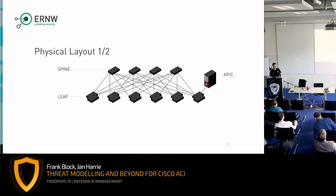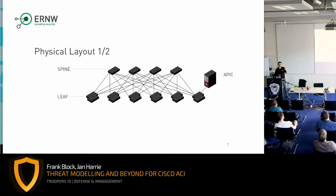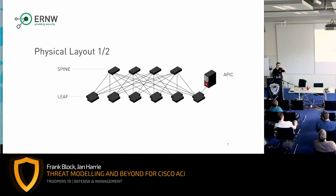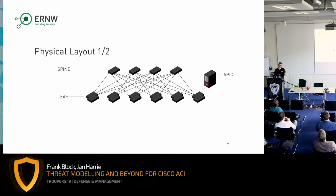Just imagine Cisco ACI as a spine-leaf construction. On the physical layer, on the spine area you have huge switches and then you have the leaf switches. The leaf switches are used to connect all the different components that you want to manage in Cisco ACI, and the communication is handled and forwarded over the spine area — so in case one machine crashes you always have a fallback, with equal load balancing established.